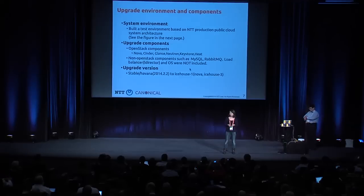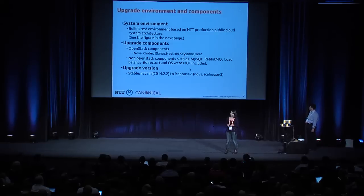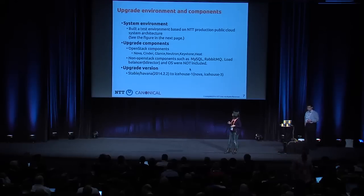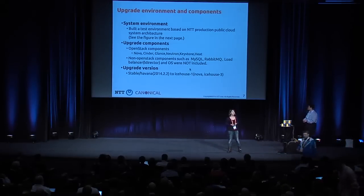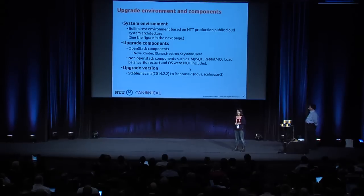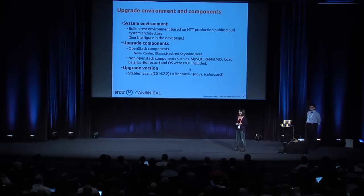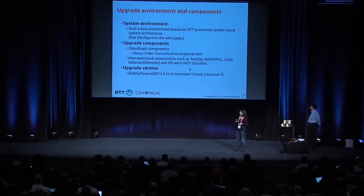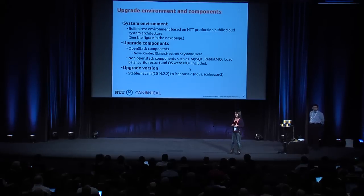They deployed a test environment following exactly the same architecture as their production environment, and conducted two to three months of testing. They defined which components to consider for the upgrade, including the core OpenStack components: Nova, Cinder, Glance, Neutron, Keystone, Heat. An important highlight is the middleware underlying components — for example, the message queue, RabbitMQ traces, load balancer service. The operating system itself was not considered in this project.